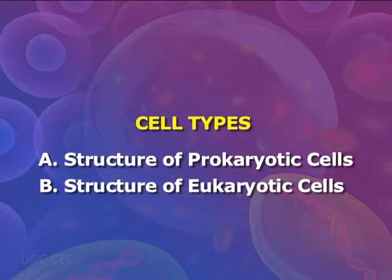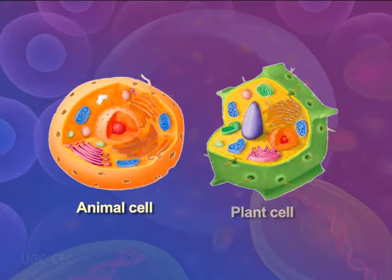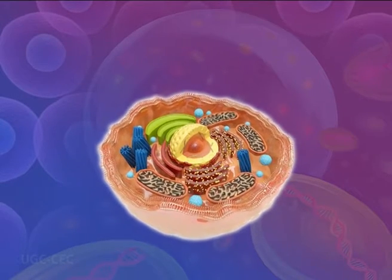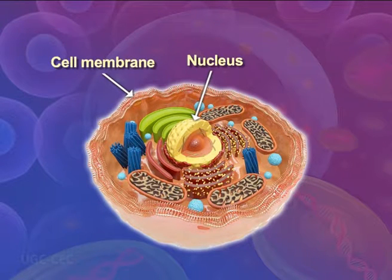Eukaryotic cells have structures determined by the specific functions carried out by the cells, so there is no single typical eukaryotic cell. The two main types are animal cells and plant cells. Eukaryotic cells generally have three main components: a cell membrane, a nucleus, and a variety of other organelles.